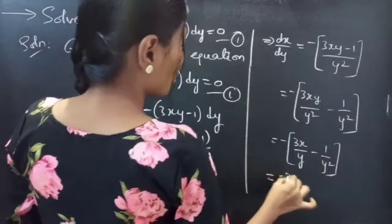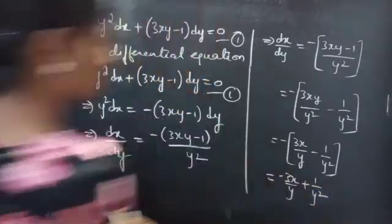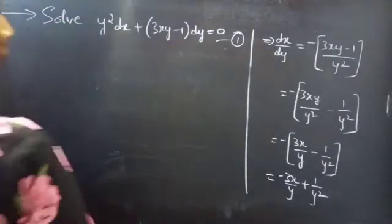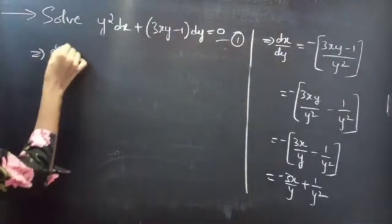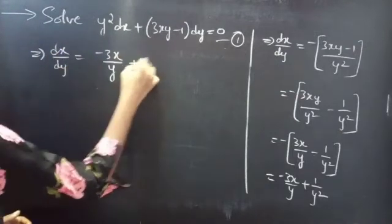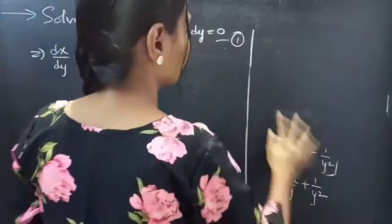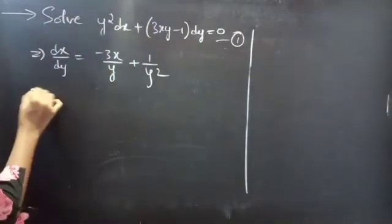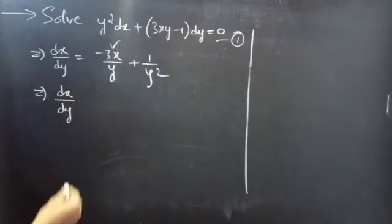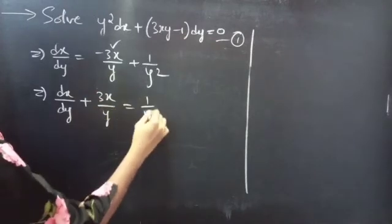This equals −3x/y + 1/y². So we got dx/dy = −3x/y + 1/y². Then, taking the first term of the RHS to the LHS, we get dx/dy + 3x/y = 1/y².